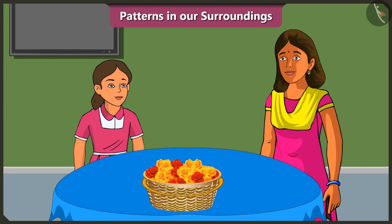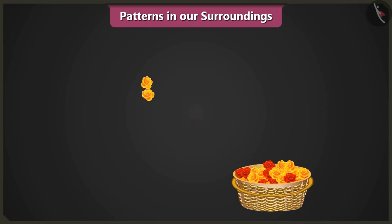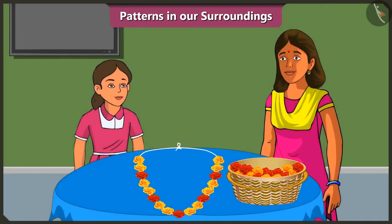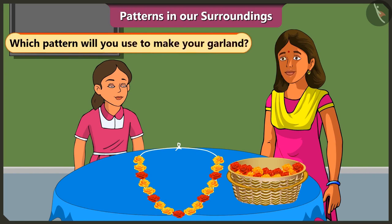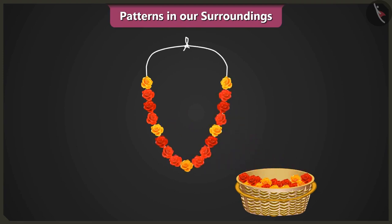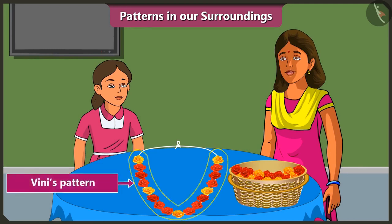They will decorate using patterns. For the pooja, they will make garlands out of red and yellow flowers. Mummy's pattern: two yellow flowers, one red flower, repeated. Vini creates a different pattern: one yellow flower, then three red flowers, repeated. Vini's garland looks very pretty with the pattern.